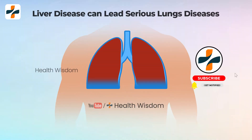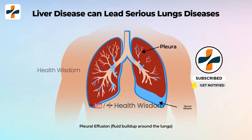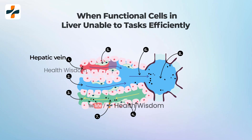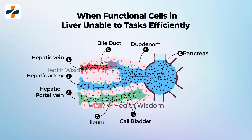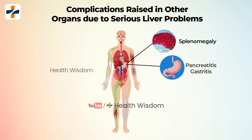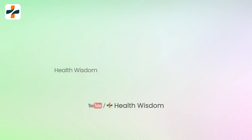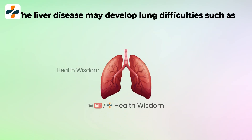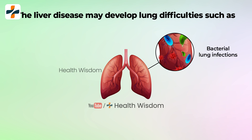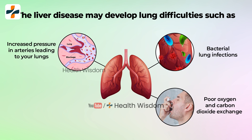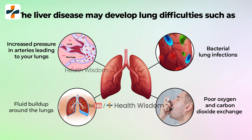Liver disease can lead to complications that affect your lungs, such as the buildup of fluid around your lungs or high blood pressure in the arteries that lead to your lungs. When the functional cells inside the liver can't perform all their tasks efficiently, complications involving other organ systems arise. These lung difficulties include bacterial lung infections, poor oxygen and carbon dioxide exchange, increased pressure in arteries leading to your lungs, and fluid buildup around the lungs.